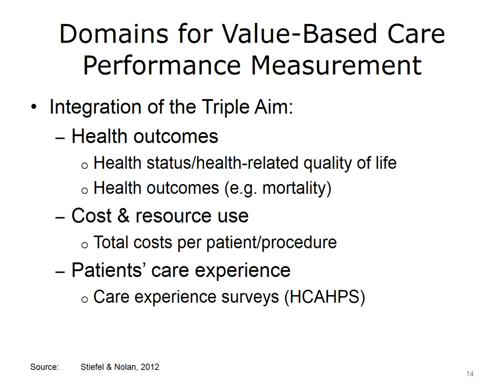Measuring the success of efforts to achieve the Triple Aim requires quantifiable data on various care components. Some of the needed data include health outcomes important to populations, such as measures of health status or health-related quality of life, as well as health outcomes such as mortality. Data on costs of care and resource use — for example, the total cost per patient per procedure — are also needed. Finally, measures of patients' perception of their care experience are needed; care experience surveys such as HCAHPS have been used to obtain these measures.